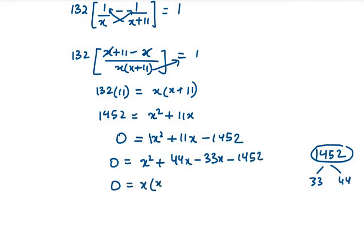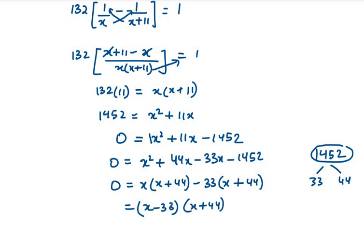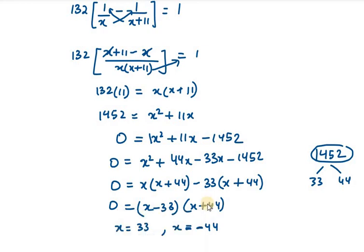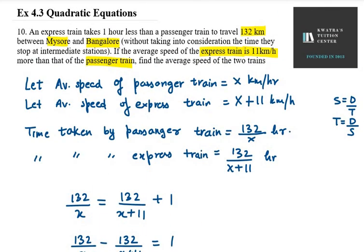Grouping the first two and last two terms: x(x plus 44) minus 33(x plus 44) equals zero, giving us (x minus 33)(x plus 44) equals zero. So x equals 33 or x equals minus 44. Since speed cannot be negative, x equals 33. Therefore, the average speed of the passenger train is 33 km per hour, and the express train speed is 33 plus 11 equals 44 km per hour. That's the answer for question number 10.